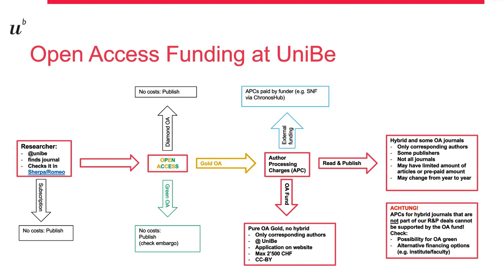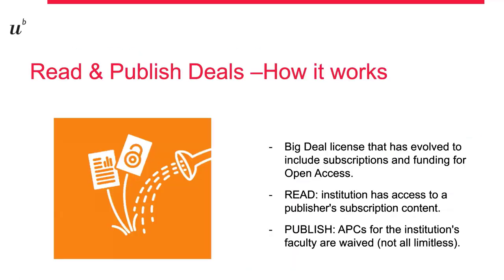Some Read and Publish Agreements do not cover all journals of a publisher. In these cases, it is important to know that publication in hybrid journals not included in the deals cannot be funded under the Open Access Fund. The Read and Publish deals are deals of the Swiss consortium with different publishers, and the University of Bern participates in some of them. These deals transform subscription licenses into agreements that include reading access to the subscription journals, as well as a publishing part that covers APCs for university members who choose to publish open access in these journals.